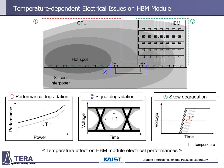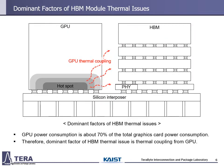Increased temperature changes the electrical characteristics of overall HBM module components. Specifically, increased temperature reduces mobility and threshold voltages, then it degrades driver strength. Increased temperature also causes material property changes, such as conductivity decreasing and increased relative permittivity. Eventually, those things cause signal degradation on the memory channel and skew degradation on on-chip global interconnections. The figure represents the dominant factors of HBM module thermal issues.